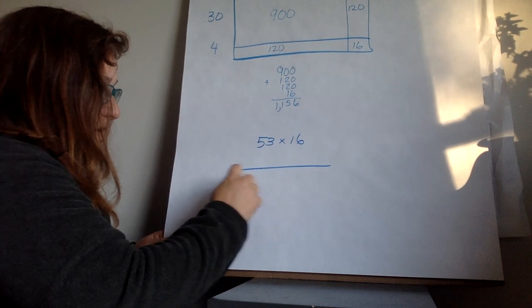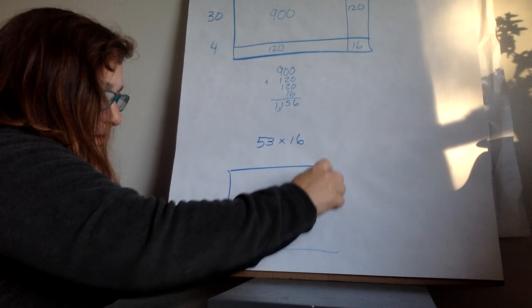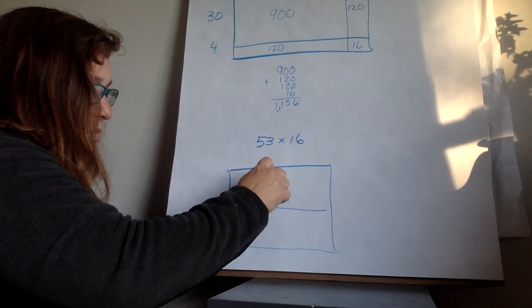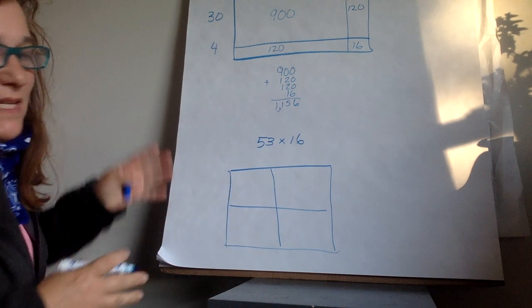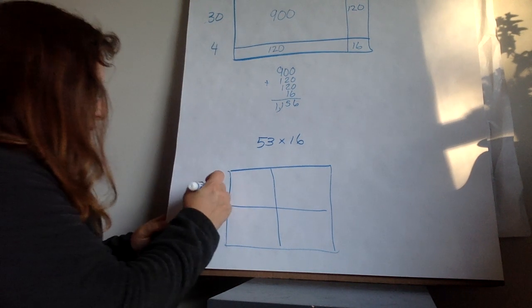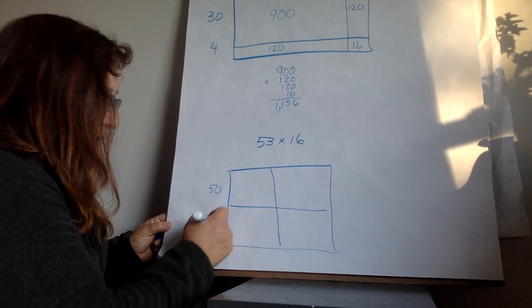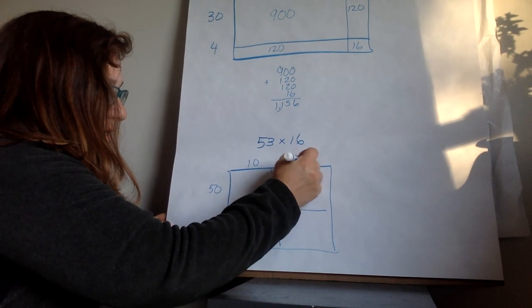I know that this is two digits. So I could divide it into four because it's two digits and two digits. Even though it's not spaced the way it is up here, I could do 50 and 3, 10 and 6.